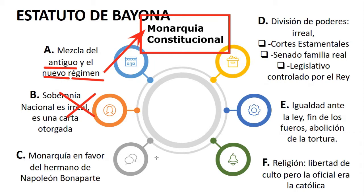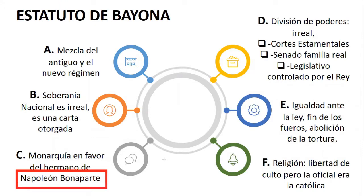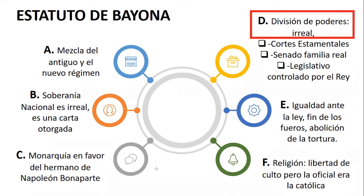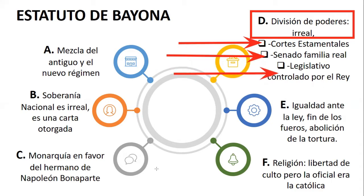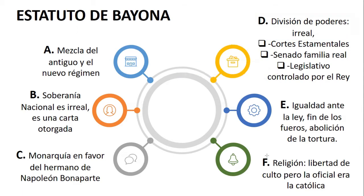La corona, que Napoleón entrega a su hermano José Bonaparte —a quien los españoles llamaban Pepe Botella por su afición al alcohol— implicaba una división de poderes irreal. Napoleón mantenía el control a través de cortes estamentarias conformadas principalmente por clases nobles y gobernantes. El Senado estaba conformado por la familia real de Napoleón Bonaparte, y el legislativo tenía un control fundamental por parte del rey, por lo que no existía una verdadera división de poderes.